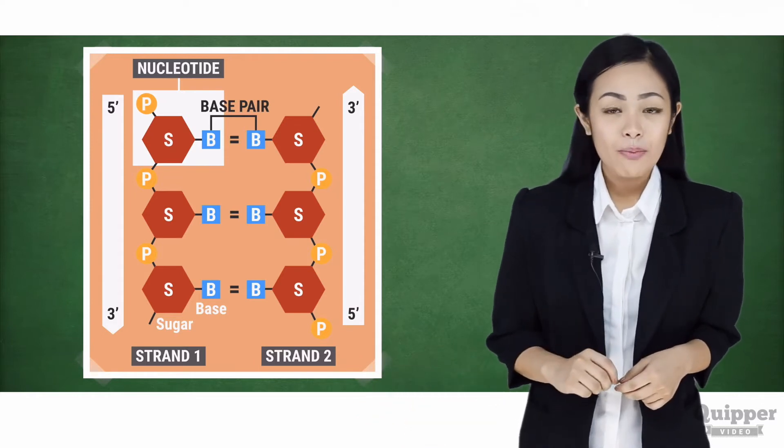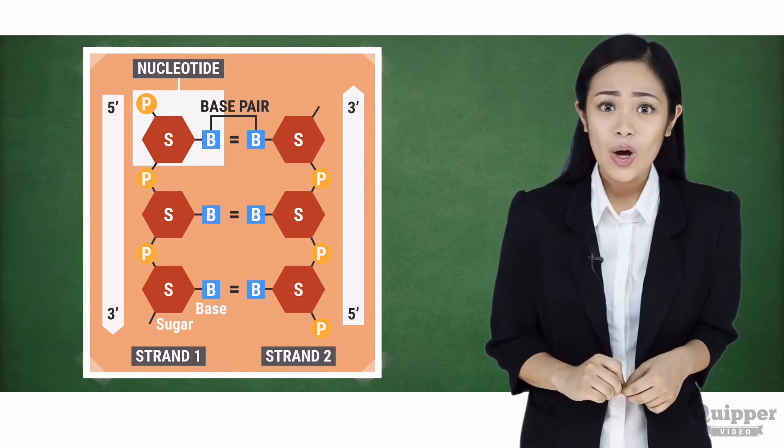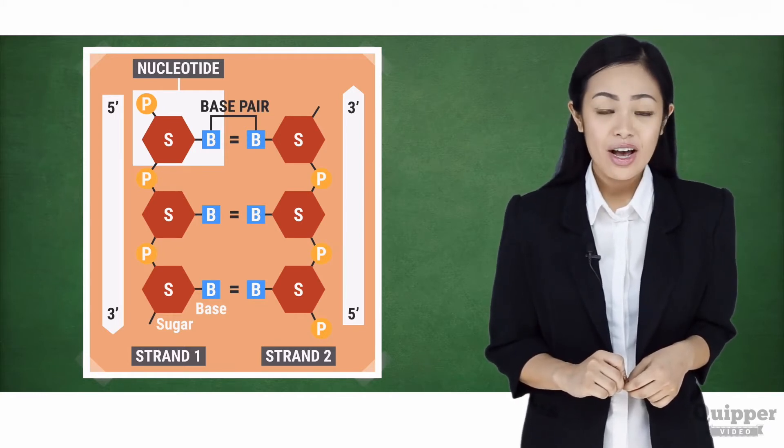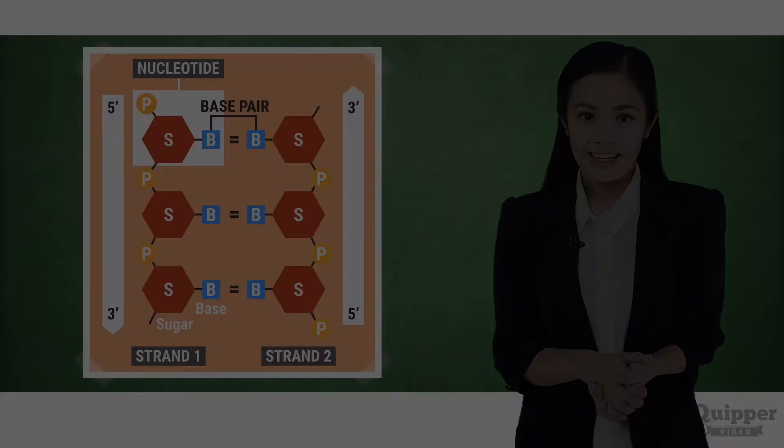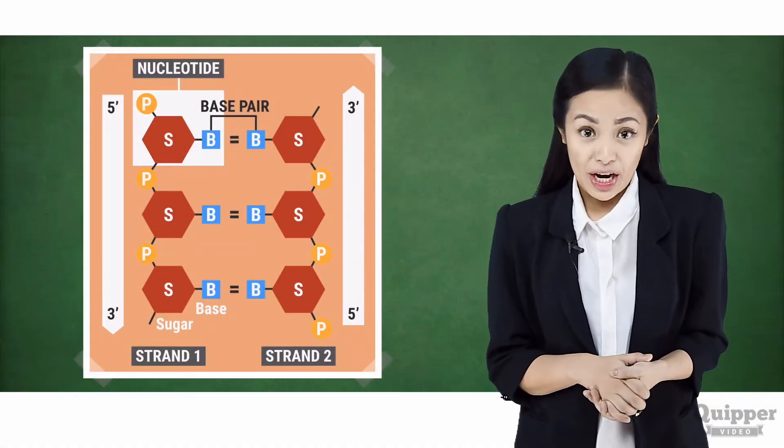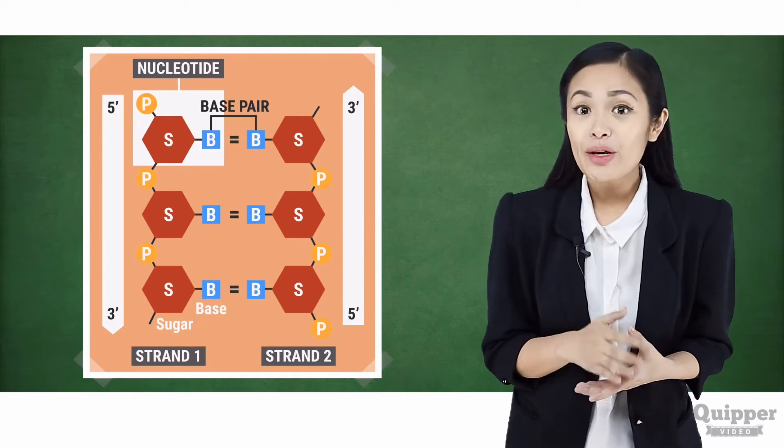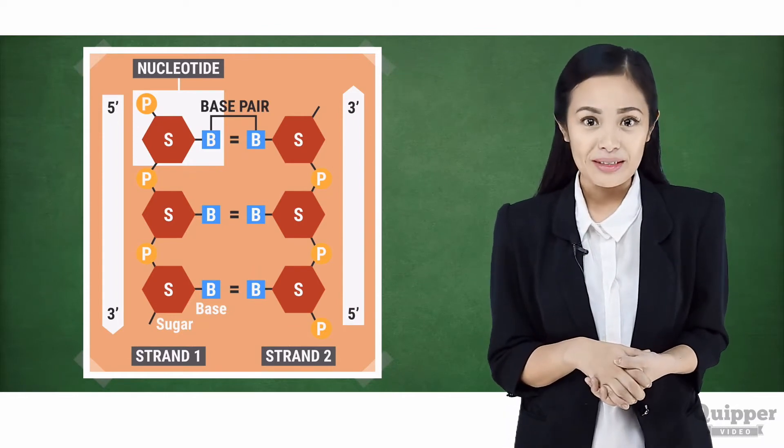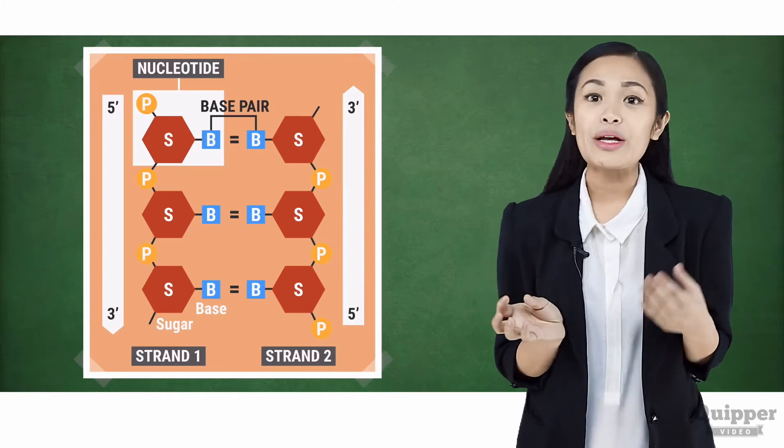has five prime to three prime. That's the opposite of the second strand, which has three prime end at the top. The two anti-parallel strands are joined by the pairing of the bases following complementary base pairing rules. So A always pairs with T, and C always pairs with G.